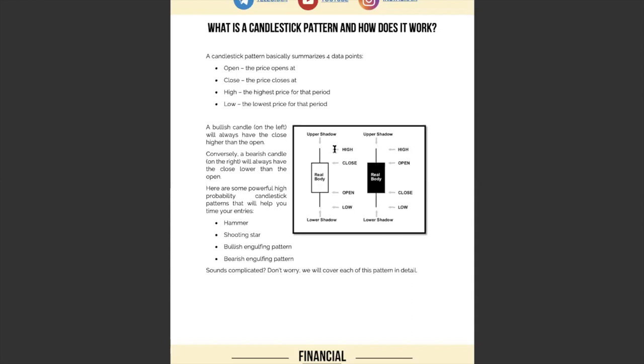The upper shadow means the highest price that price has actually went for that period. And the lower shadow refers to the lowest price that price has went during that period. So you can see over here, I actually talked about it, the highest price for that period and the lowest price for that period.